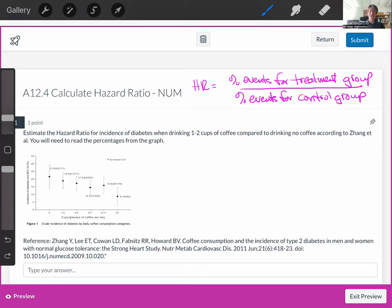So hazard ratio is the percent of events for the treatment group divided by the percent of events for the control group. And what we've got here is incidence of diabetes and 95% confidence interval. We'll need the data points versus cups or glasses of coffee per day.